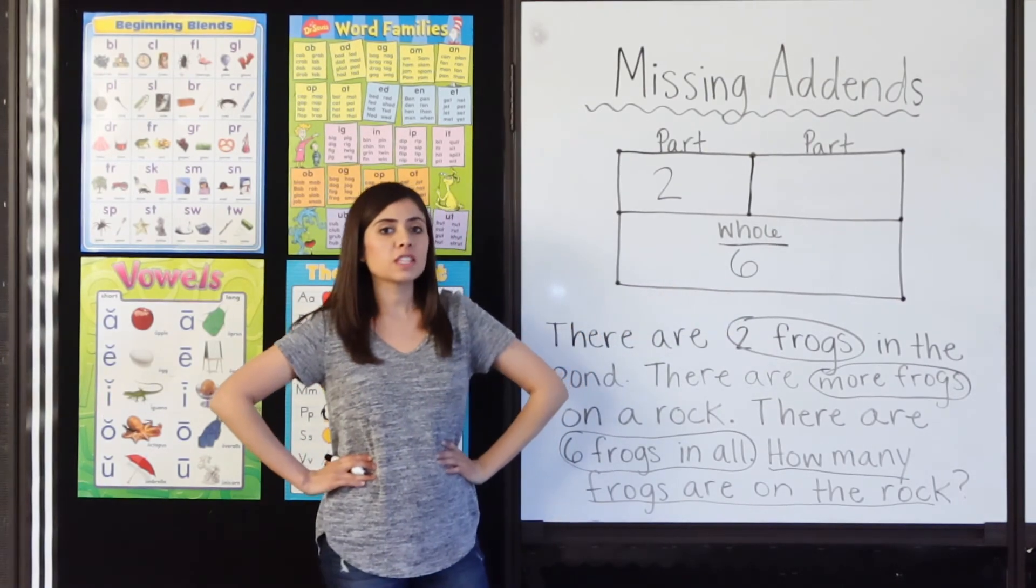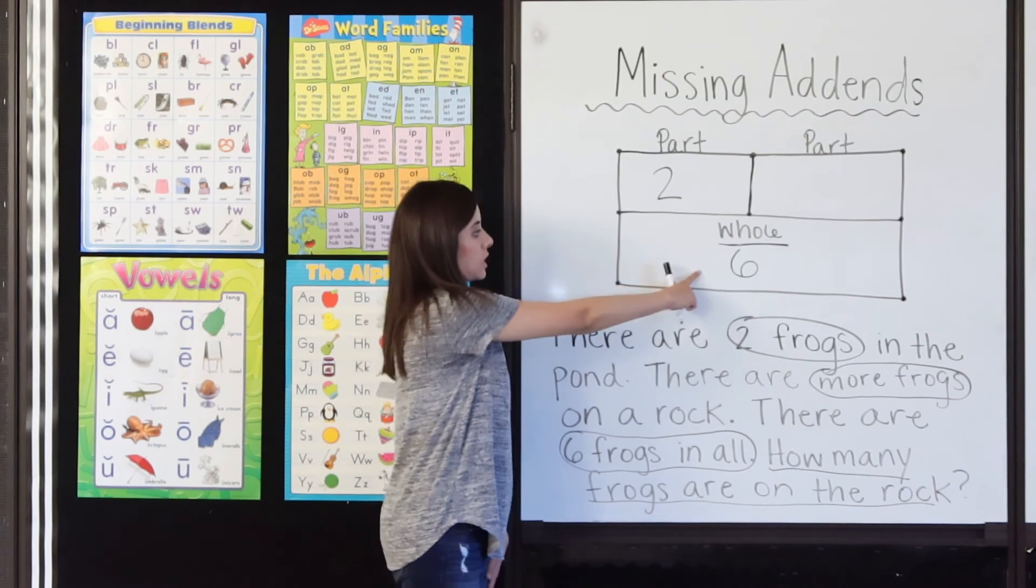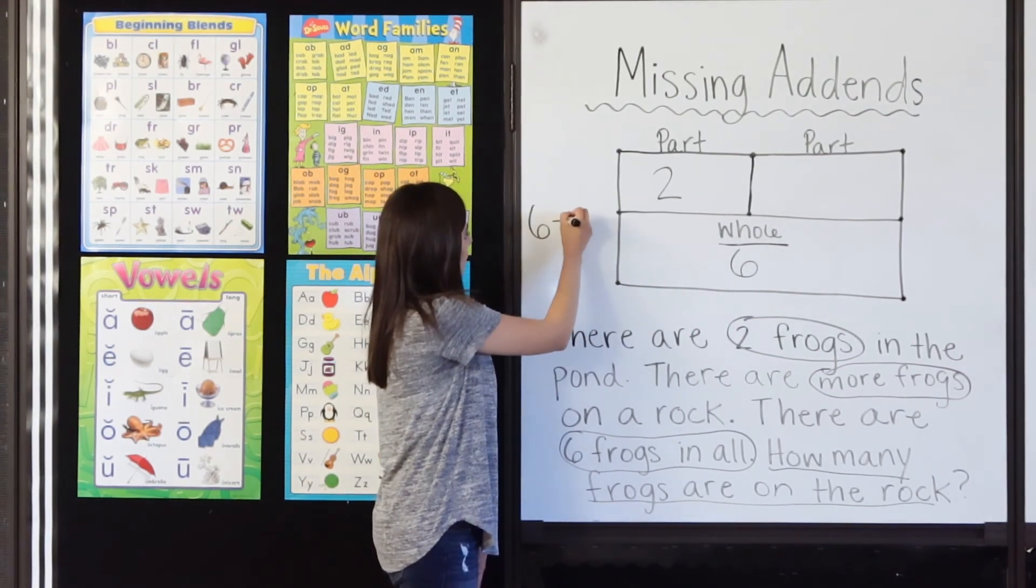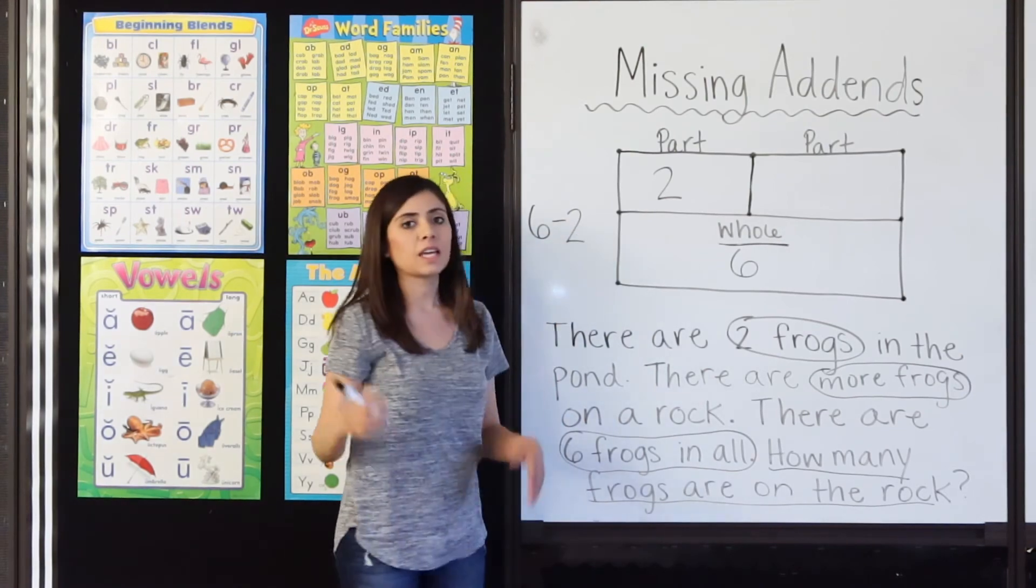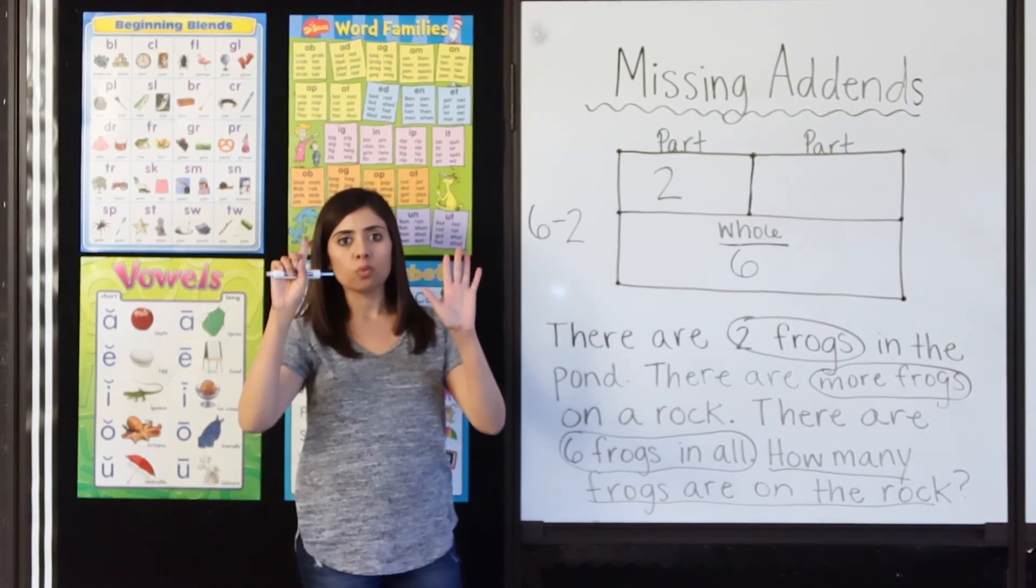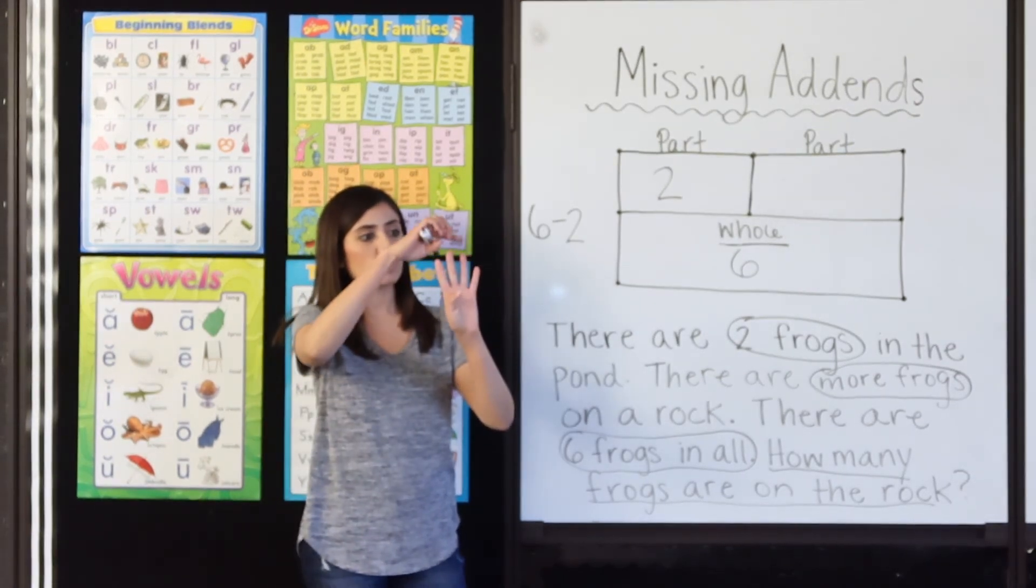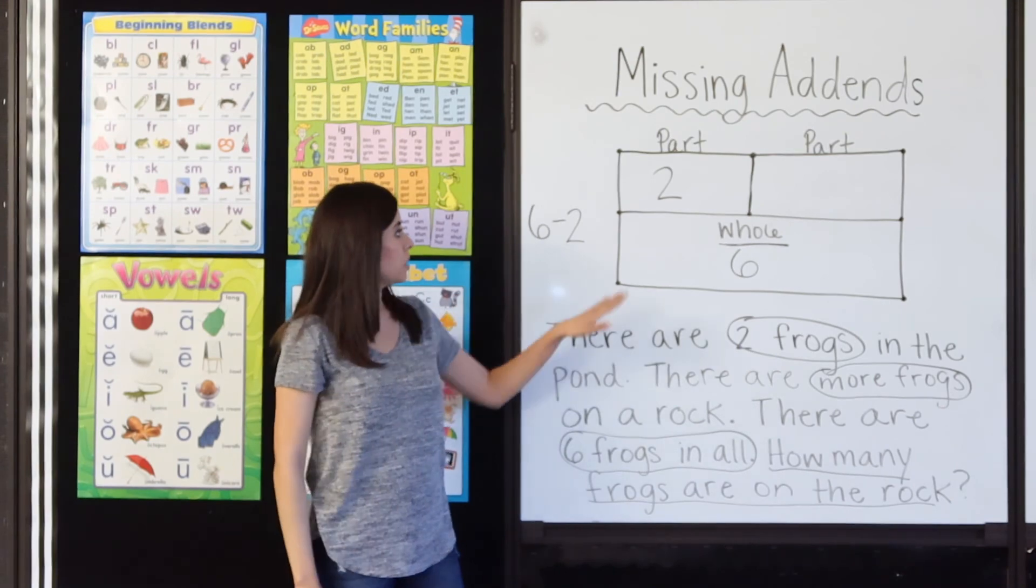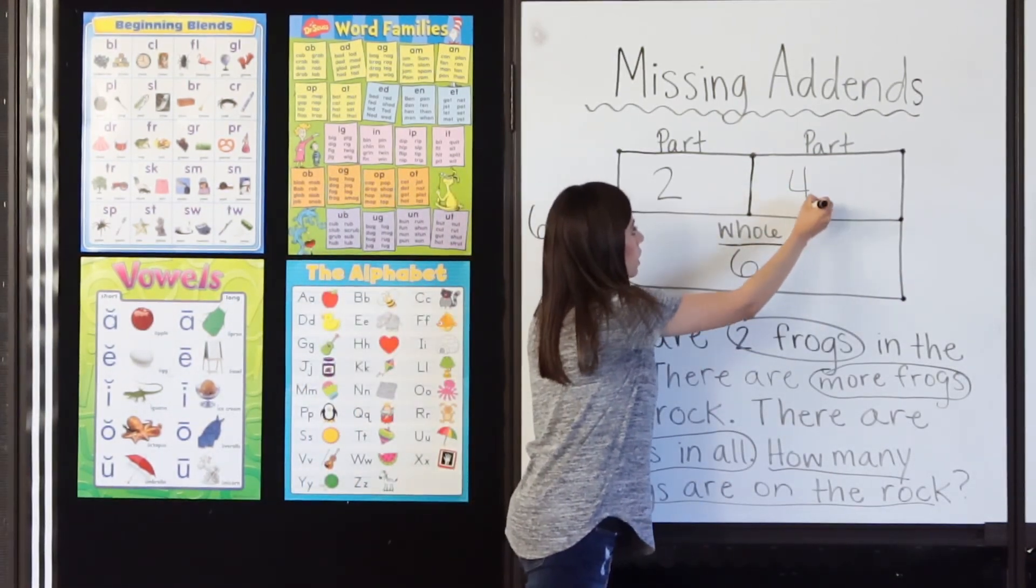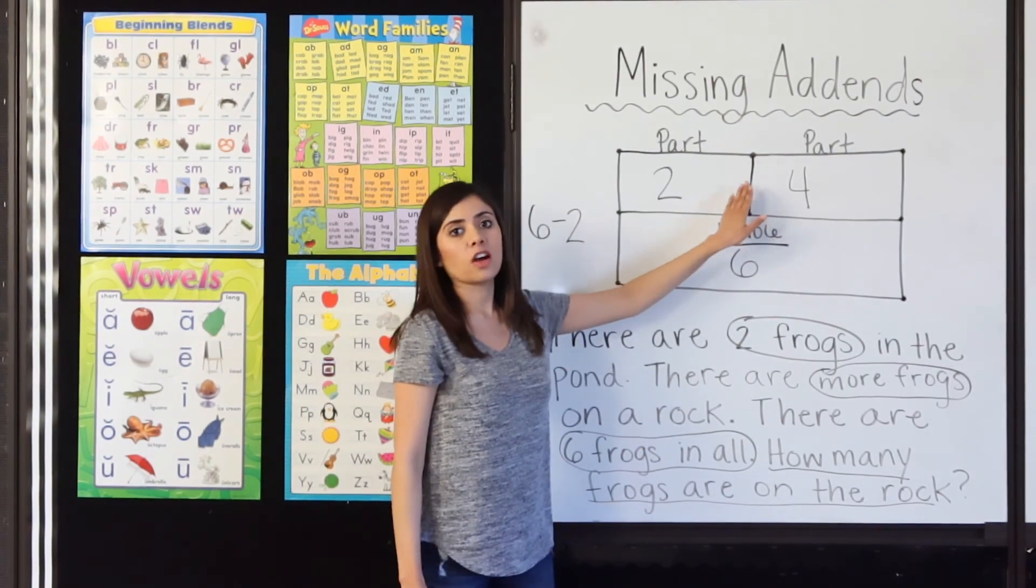Hmm, for this one, I think I will use related facts. I will take 6 and subtract 2. 6 minus 2. What does that equal? I will hold up 6 fingers and put 2 down. 1, 2. How many do I have left? 1, 2, 3, 4. So, that means 2 plus 4 equals 6. There are 4 frogs on the rock. Very good.